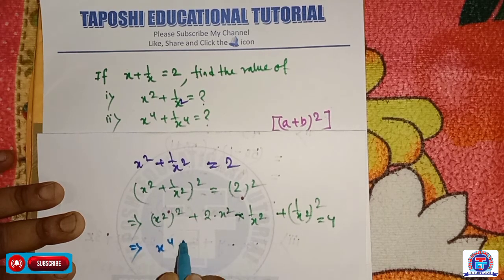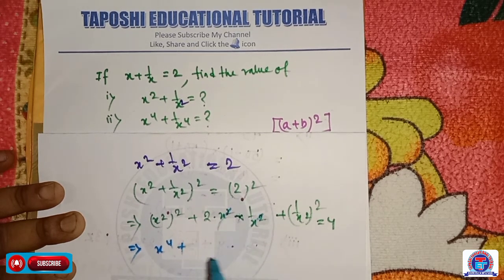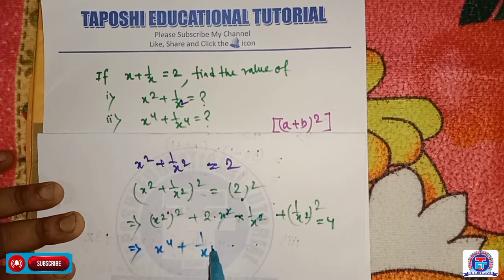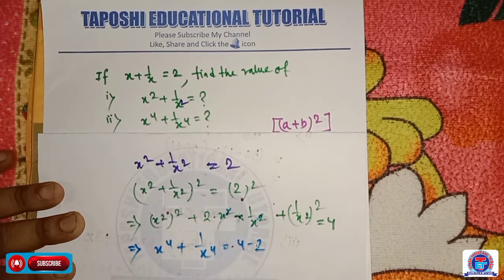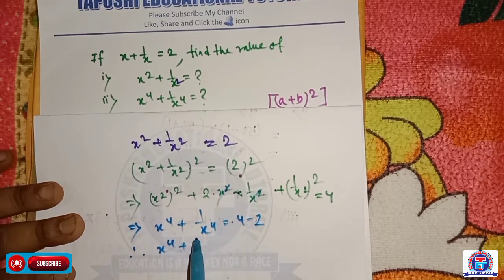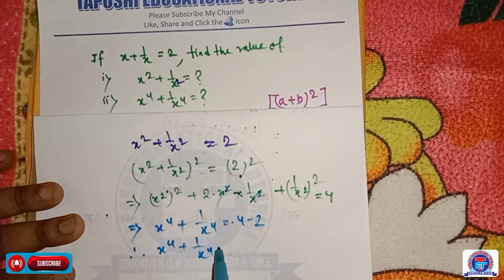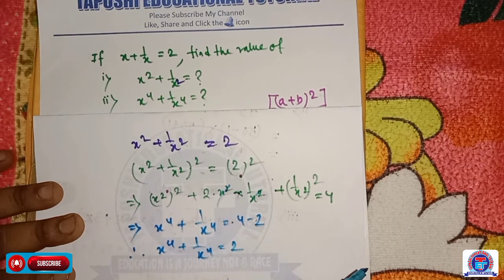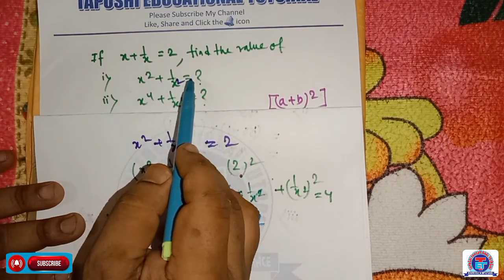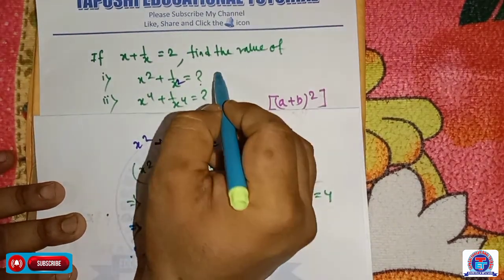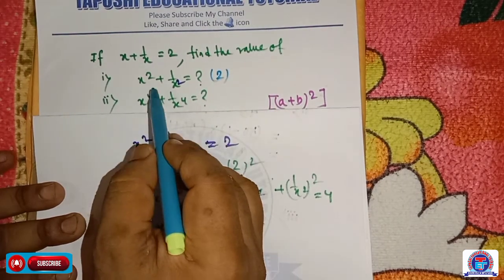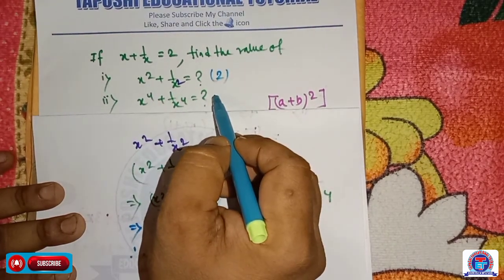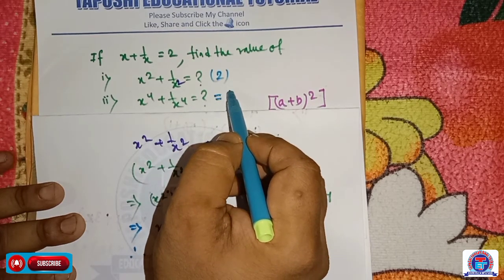So x to the power 4 plus — the middle term cancels — plus 1 by x to the power 4 is equal to 4 minus 2. Therefore x to the power 4 plus 1 by x to the power 4 is equal to 2. We have also easily calculated x square plus 1 by x square is equal to 2, and x to the power 4 plus 1 by x to the power 4 is equal to 2.